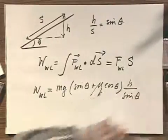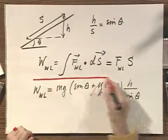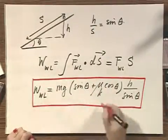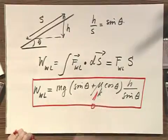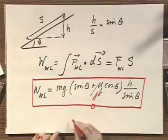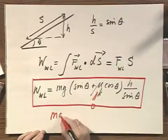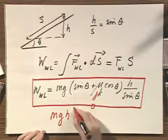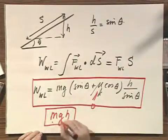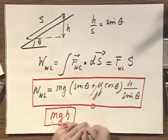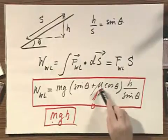And again, it's always nice to check that you get a trivial answer if you take all the friction out. If you take the friction out and you make this zero, then you get as an answer that the work that Walter Lewin has to do equals mgh. The famous equation, Massachusetts General Hospital. That's always the work you have to do if there is no friction.